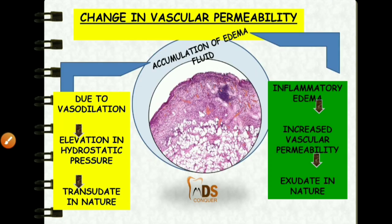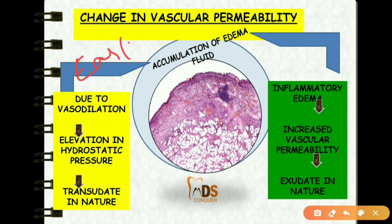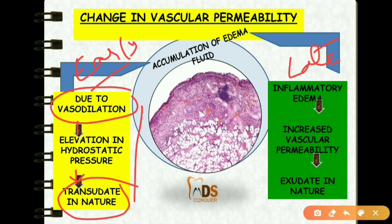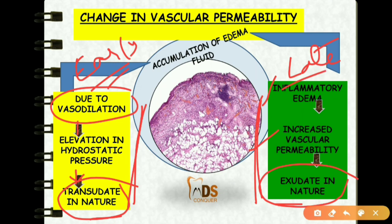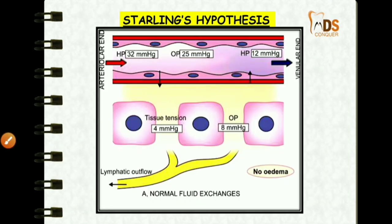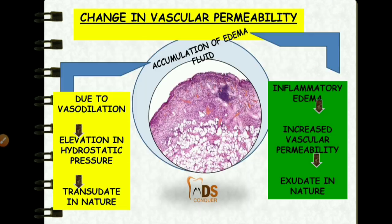The second step in vascular events is changes in vascular permeability, which may be early changes or late changes. Early changes: because of vasodilation, there is elevation of hydrostatic pressure leading to formation of fluid which is transudate in nature. Late changes: because of inflammatory edema, there is increased vascular permeability forming fluid which is exudate in nature. Transudate is the early change; exudate is the late change.